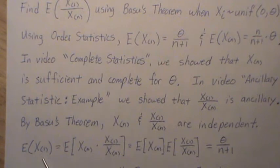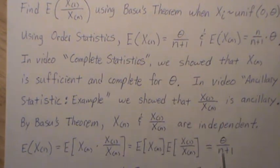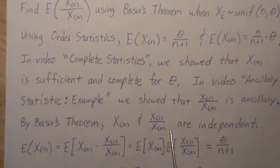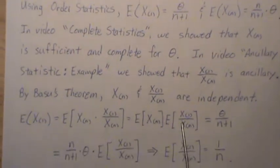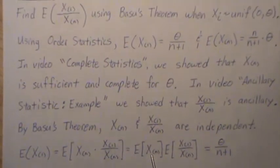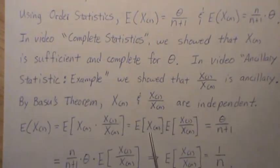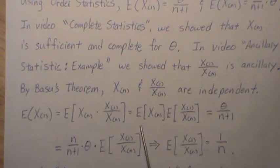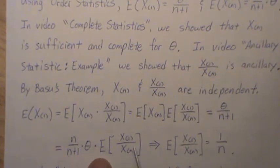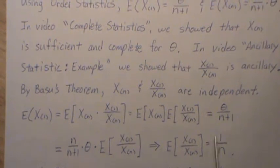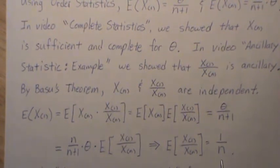But these are independent by Basu's theorem so we can look at the expected values individually. The expected value of the minimum order statistic we said was theta over n+1. The expected value of the largest order statistic is n theta over n+1. So we can take this and bring it down. That says this is equal to that.